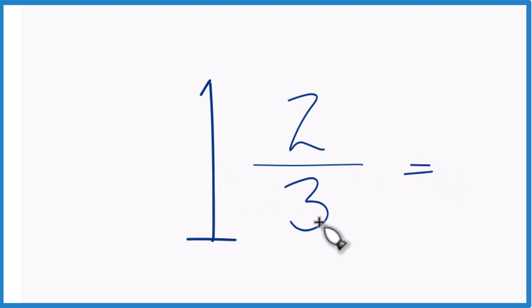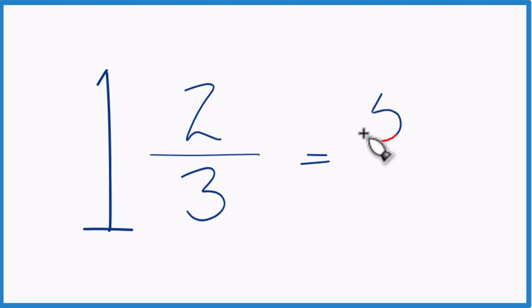You take 1 times 3, that's 3, 3 plus 2, that gives you 5, and then you just bring the 3 across the denominator, and that's your improper fraction.